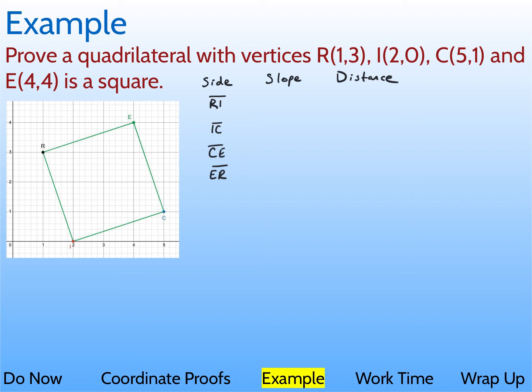So the method I'm going to use to prove that this quadrilateral RICE is a square is I'm going to find all the slopes, all the distances, and then write a sentence that just explains what we saw.